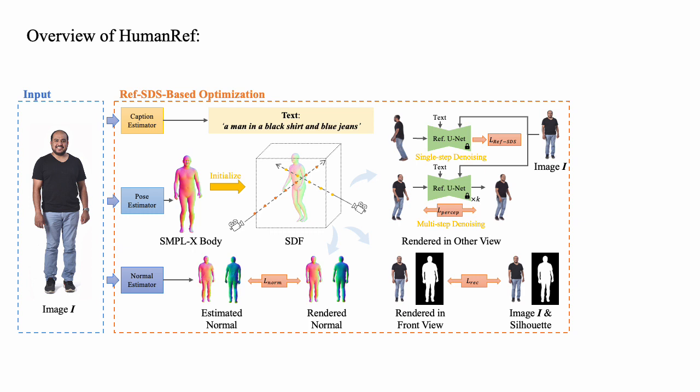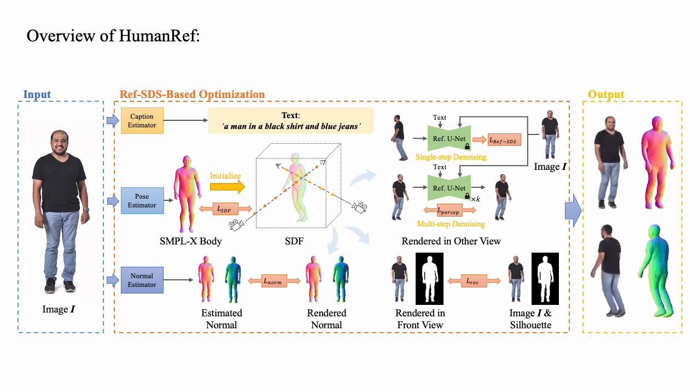To constrain the pose of the generated human, we additionally introduce an L1-norm SDF loss between the predicted signed-distance value and that queried from SMPLX body mesh. By employing these strategies, our HumanRef could generate a sharp and realistic 3D-clothed human aligned with the input image.